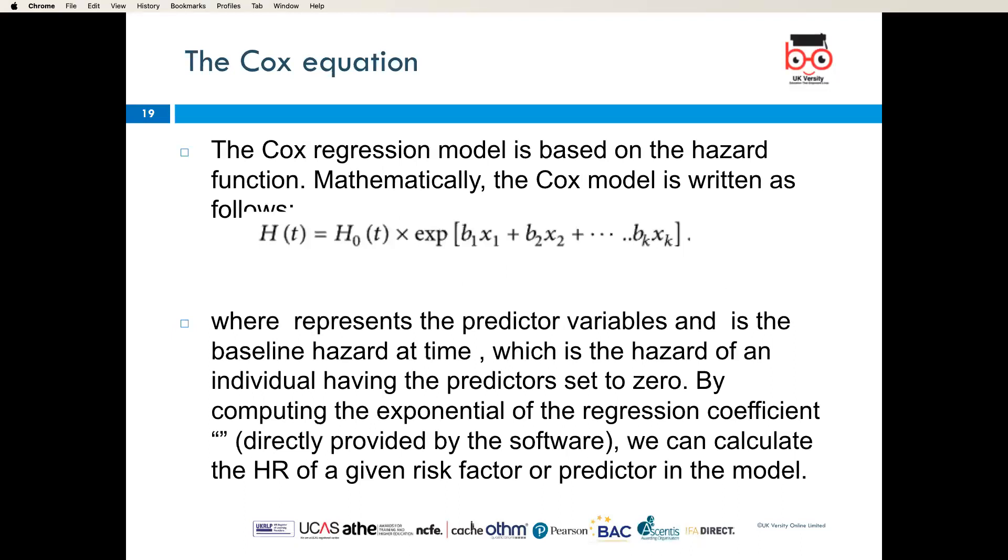This is the Cox equation. The Cox regression model is based on the hazard function. Mathematically, the Cox model is written as follows: H(t) = H_0(t) × exp[b_1x_1 + b_2x_2 + ... + b_px_p], where the formula represents the predictor variables and H_0(t) is the baseline hazard at time t, which is the hazard of an individual having the predictors set to zero. By computing the exponential of the regression coefficient directly provided by the software, we can calculate the hazard ratio HR of a given risk factor or predictor in the model.